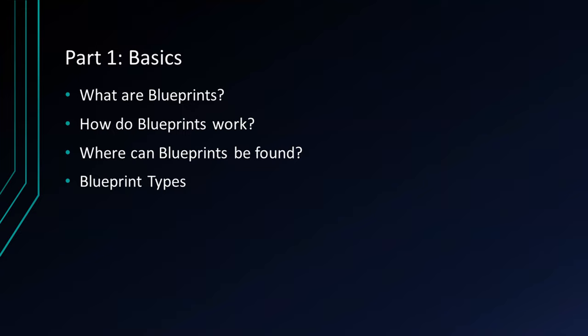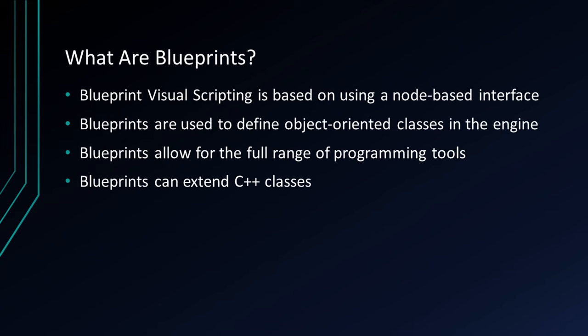Part 1: Basics. In this section, you will learn what blueprints are, how blueprints work, where blueprints can be found, and blueprint types. Blueprint Visual Scripting is based on using a node-based interface. Blueprints are used to define object-oriented classes in the engine, allow for the full range of programming tools, and blueprints can extend C++ classes.